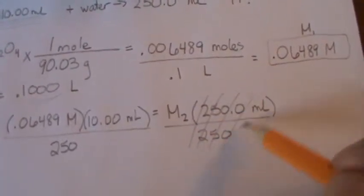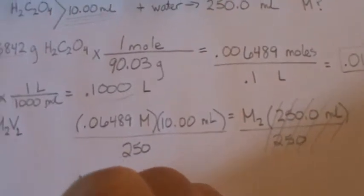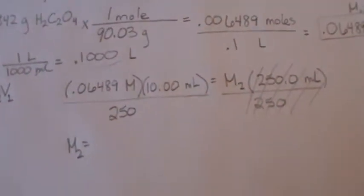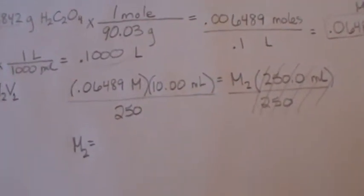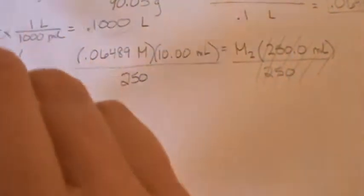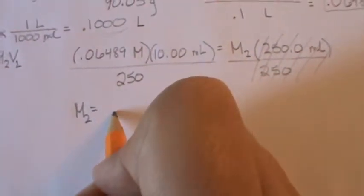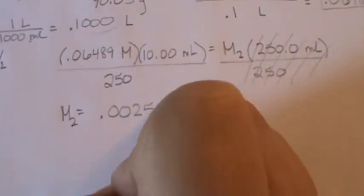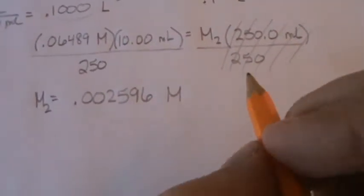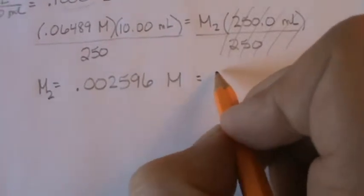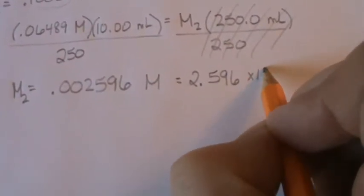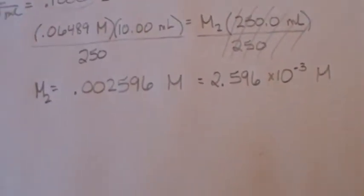And so M2 is equal to 0.06489 times 10 divided by 250. So again, if I look through here, I can have four significant figures, that's what I have for everything, so it becomes 0.002596 molar. If you wanted to have that in scientific notation, or if your calculator gives it in scientific notation, it would be 2.596 times 10 to the negative third molar. There you go. Thank you.